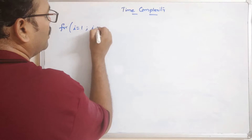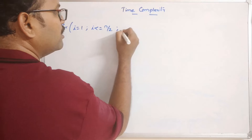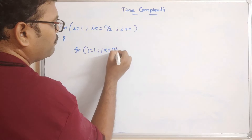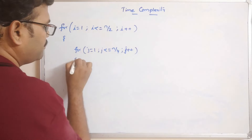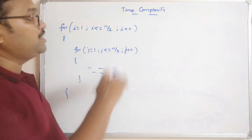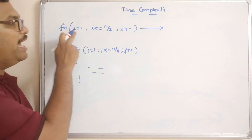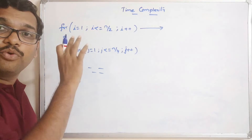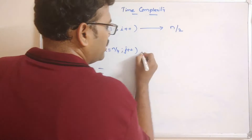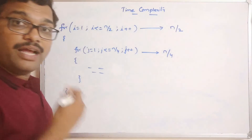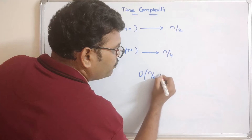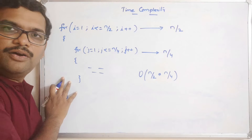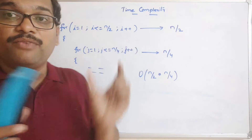Let us take one more example: for i equal to 1, i less than or equal to n/2, i plus plus — and for j equal to 1, j less than or equal to n/4, j plus plus. Here there is no dependency, so we can simply multiply both. The outer loop runs n/2 times and the inner loop runs n/4 times, giving us O(n/2 × n/4).